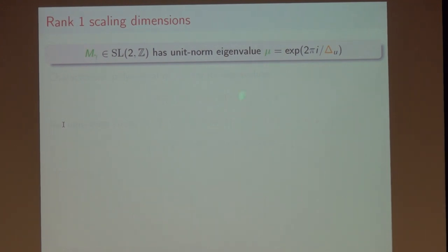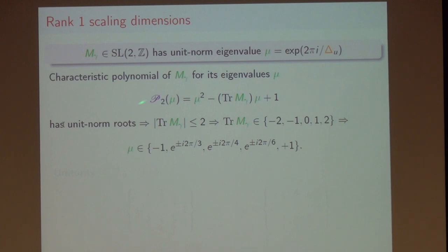When I transport it around the singularity, it has to suffer a monodromy transformation. In the rank one case, it satisfies a monodromy transformation by this integer 2 by 2 matrix, but on the other hand, it has to be e^{2πi/delta_u} times itself. So that says that the only allowed monodromies that could possibly appear are ones that have a unit norm eigenvalue. If I can figure out what these eigenvalues are, then I'll know what the delta_u's are. Let me just try to figure out the possible unit norm eigenvalues that element of SL(2,Z) possibly have. We write down the characteristic polynomial. Remember, these are determinant one matrices. The condition for this polynomial to have a unit norm eigenvalue is simply that the absolute value of the trace is less than or equal to 2.